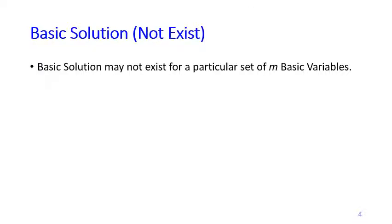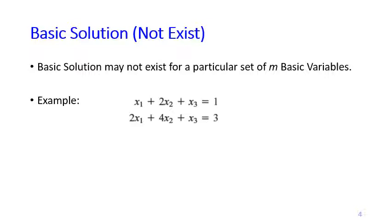Sometimes, though, a basic solution may not exist for a particular selection of basic variables. For example, if we set x3 as non-basic — meaning x3 equals zero — and try to solve x1 plus x2 = 1 and 2x1 plus 4x2 = 3, we get no solution. So for some selections of basic and non-basic variables, no basic solution exists.